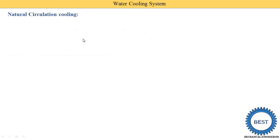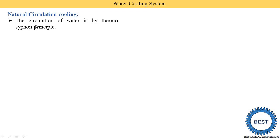First we understand the natural circulation cooling. Its name suggests natural circulation of the cooling. Suppose in a room, how does circulation of air take place — if we use a fan it is called forced circulation, and if the fan is off it is called natural circulation. Similarly, in the natural circulation cooling system for engines, the circulation of water is by the thermosiphon principle — no extra devices like a blower, pump, or compressor are used. For a water cooling system we generally need a pump to transfer the water, but in natural circulation the pump is not used.